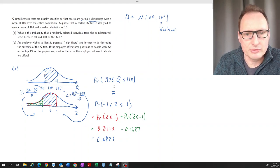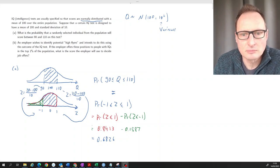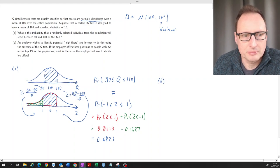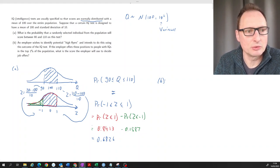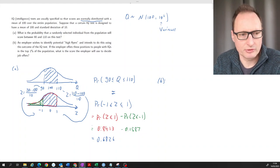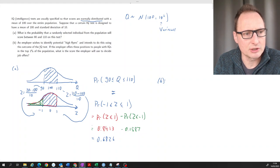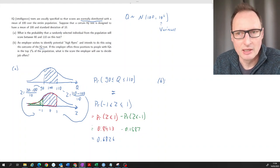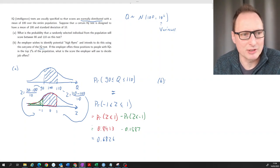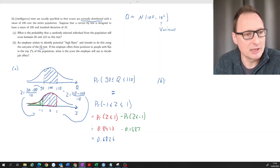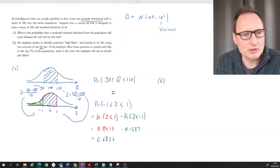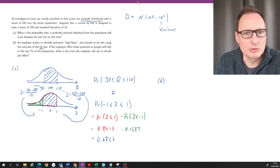So the second part of the question, part B. An employer wishes to identify potential high flyers and intends to do this using the outcome of the IQ test. Now, before I continue, I should of course say that would be a pretty bad decision to only base your decision on IQ tests. There's lots of evidence that IQ tests are culturally laden. You can train for them. And therefore, if you can train for them, then do they really represent intelligence? But anyway, that aside. If the employer offers these positions to people with IQs in the top 1% of the population, what is the score the employer will use to decide job offers?